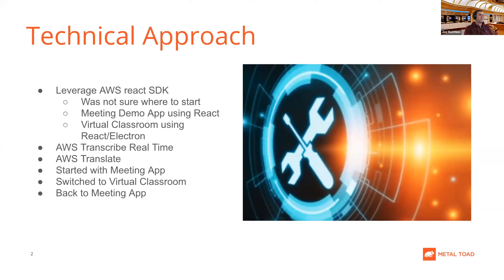Technical approach: there are two boilerplate apps — one is a meeting app in React for the web, and one is a virtual classroom app using React with Electron. Electron is a framework for creating React apps for local machines as actual applications, so it would be an actual Apple or Windows application rather than a web app. We're using AWS Transcribe real-time with WebSockets and AWS Translate. I ended up starting with the meeting app, switched to the virtual classroom, and then back to the meeting app.